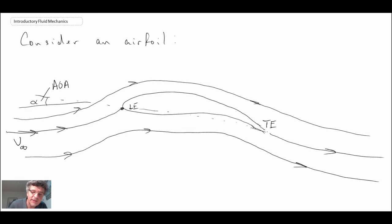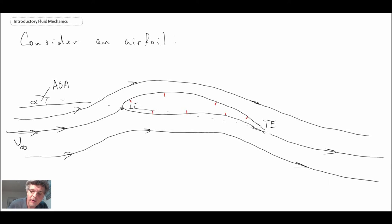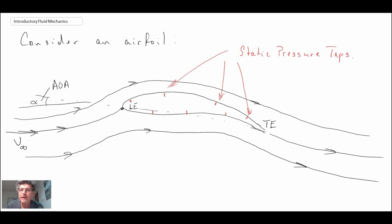I have an airfoil section with pressure taps in it. There is one on the top near the leading edge, one on the top near the trailing edge, and two more in between. On the bottom there are three pressure taps — one in the middle and two others. These are static pressure taps measuring the static pressure in the flow. We'll have four pressures on the top: top one, two, three, and four; and similarly bottom one, two, and three.